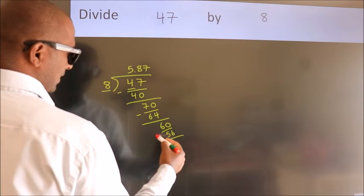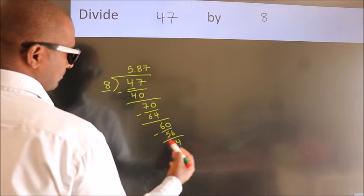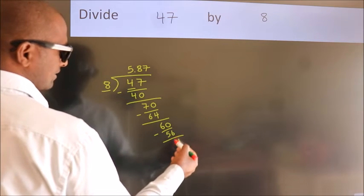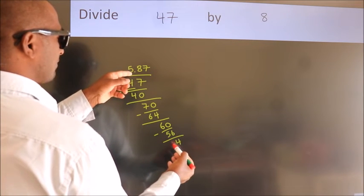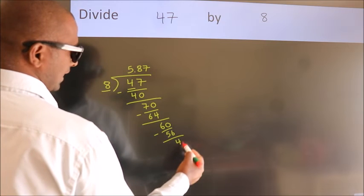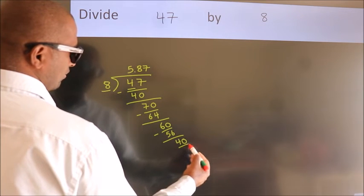Now, we subtract. We get 4. After this, we already have the decimal. So, directly take 0. So, 40.